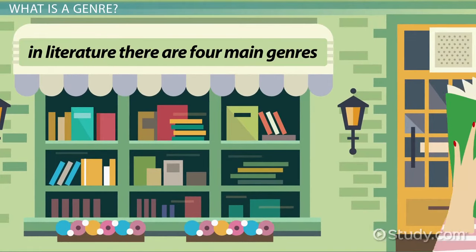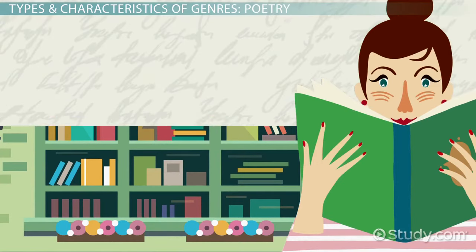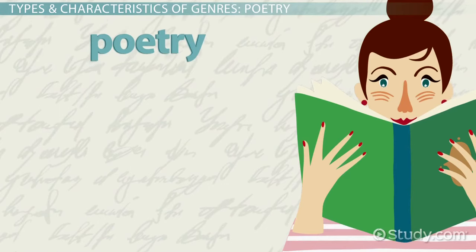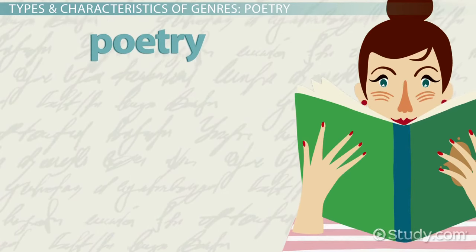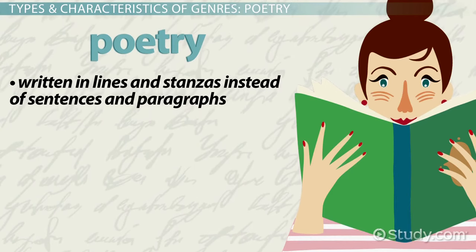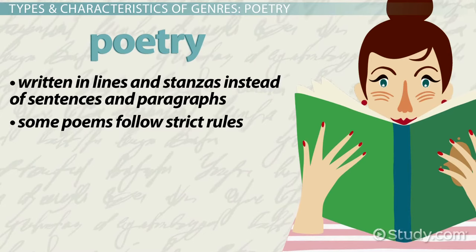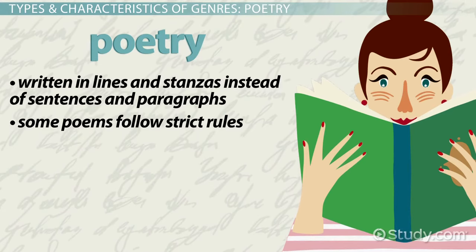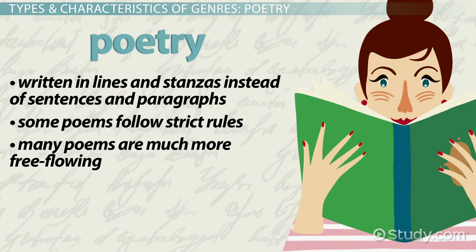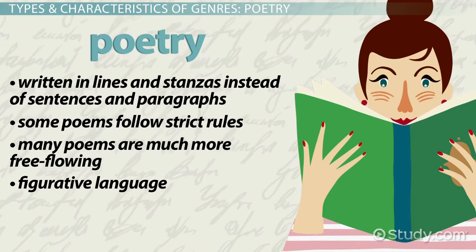In literature, there are four main genres to help the reader focus their expectations for the piece, though these genres can be broken down even further. A main literary genre is poetry. All poems share specific characteristics. For example, poetry is written in lines and stanzas instead of sentences and paragraphs. Some poems follow strict rules as to the number and length of lines and stanzas, whereas many poems are much more free-flowing.